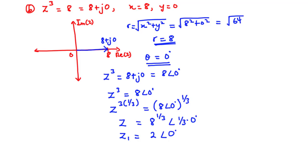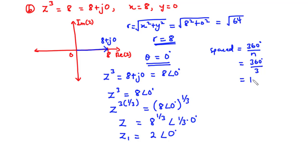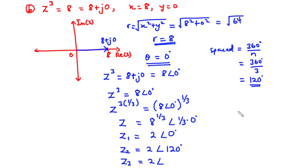Now let's find the other two solutions. The solutions to a complex number have the same modulus, but they are symmetrically spaced by 360 degrees divided by n. In this case n equals 3, so 360 divided by 3 equals 120 degrees. Therefore, z2 has the same modulus of 2, and we add 120 degrees to give 2∠120°. For z3, we add 120 to 120, giving 2∠240°. Therefore, these are the roots of z to the power 3 equals 8.